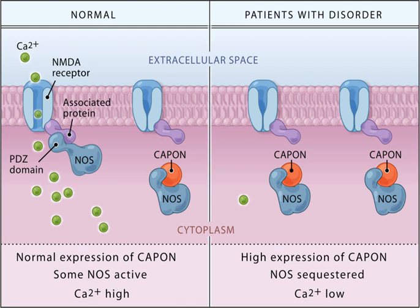Many neurotransmitters are synthesized from simple and plentiful precursors such as amino acids, which are readily available from the diet and only require a small number of biosynthetic steps for conversion. Neurotransmitters play a major role in shaping everyday life and functions. Their exact numbers are unknown, but more than 200 chemical messengers have been uniquely identified.